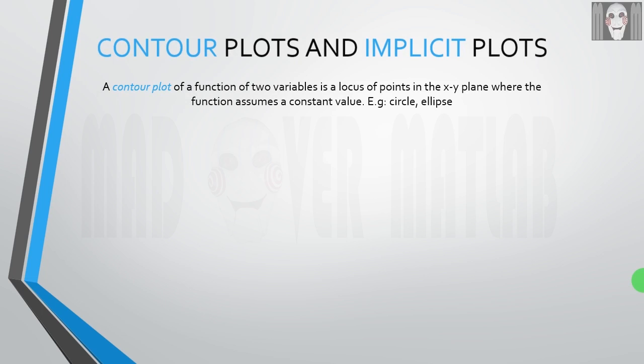Let us first see the definition of a contour plot. A contour plot of a function of two variables is a locus of points in the XY plane where the function assumes a constant value. Examples are a circle and an ellipse. Let us see how to plot this contour.